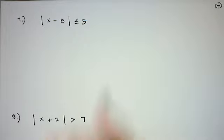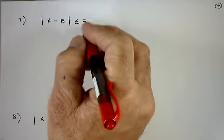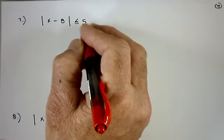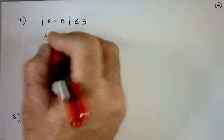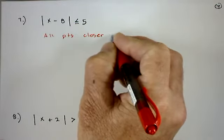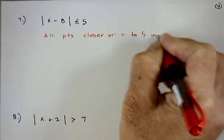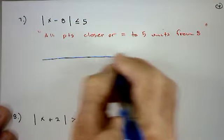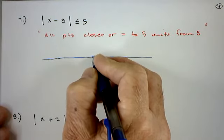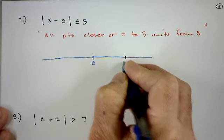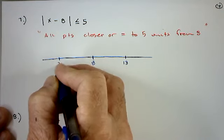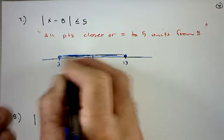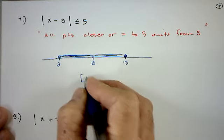You can also solve absolute value inequalities using distance. For |x − 8| ≤ 5, this asks: what points are within five units of 8? Going five units right of 8 reaches 13; five units left reaches 3. We want all numbers within or equal to five units of 8, so the solution is all numbers from 3 to 13. In interval notation: [3, 13].